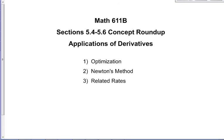Hi folks, welcome to the concept roundup for sections 5.4 to 5.6 in Math 6.11b. We're looking at applications of derivatives, specifically optimization, Newton's method, and related rates. If you look down below in the video description, you'll find that the video's been time-stamped, so if you want to skip to Newton's method, just click. You'll also find links to downloadable notes and some practice problems. Let's dive in.